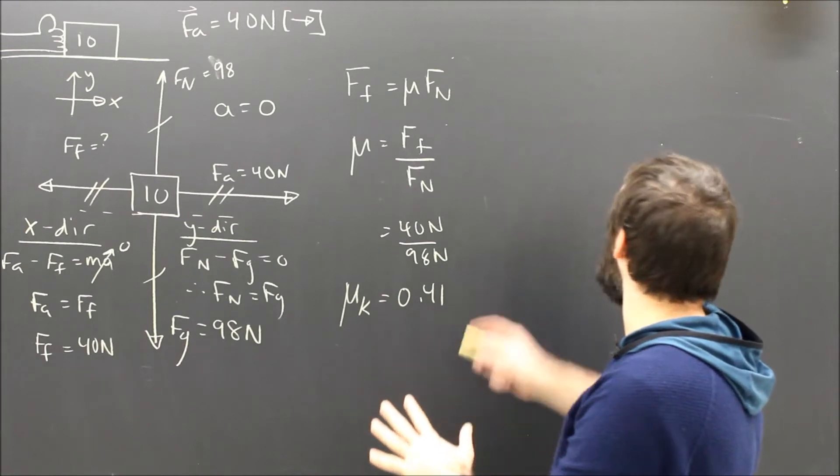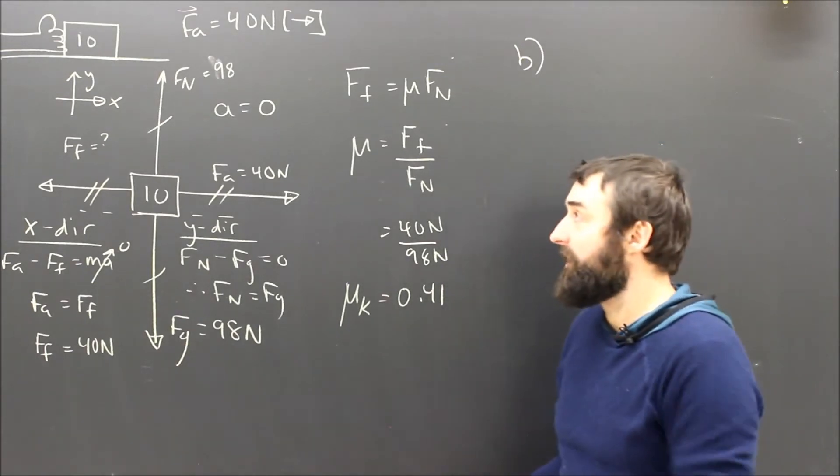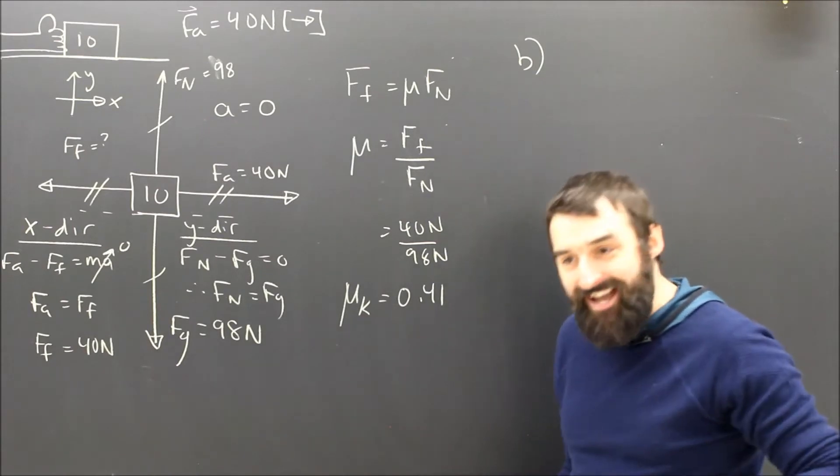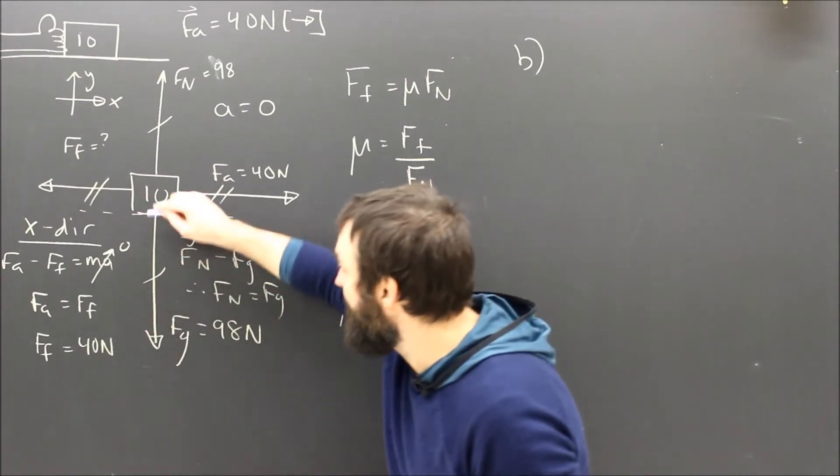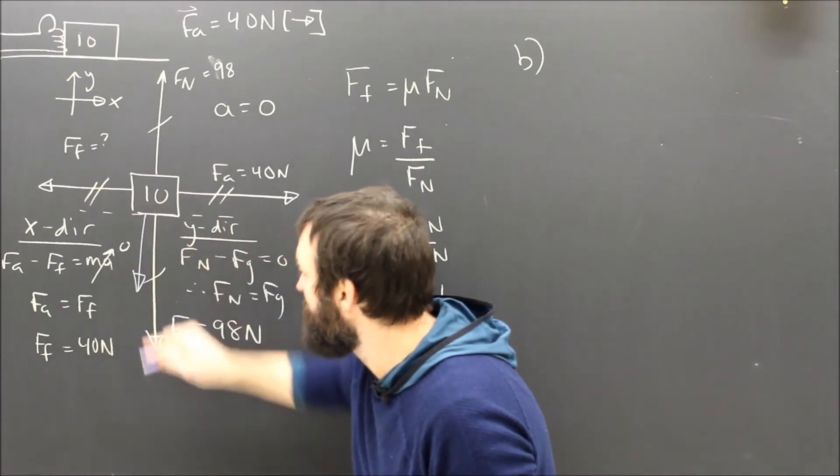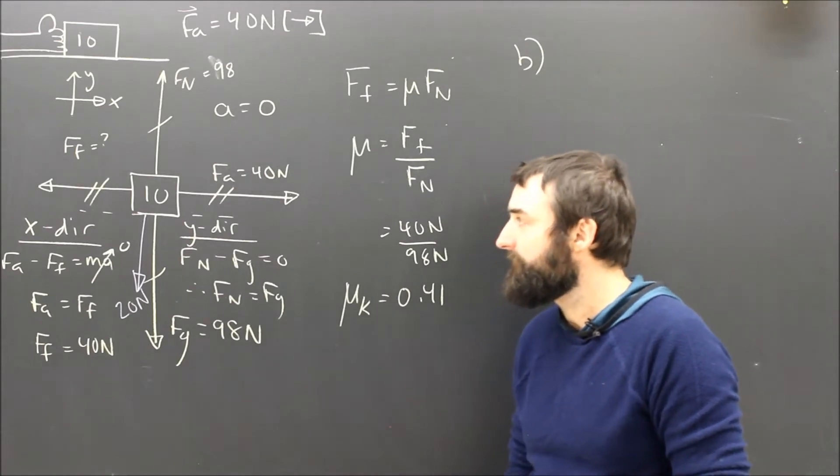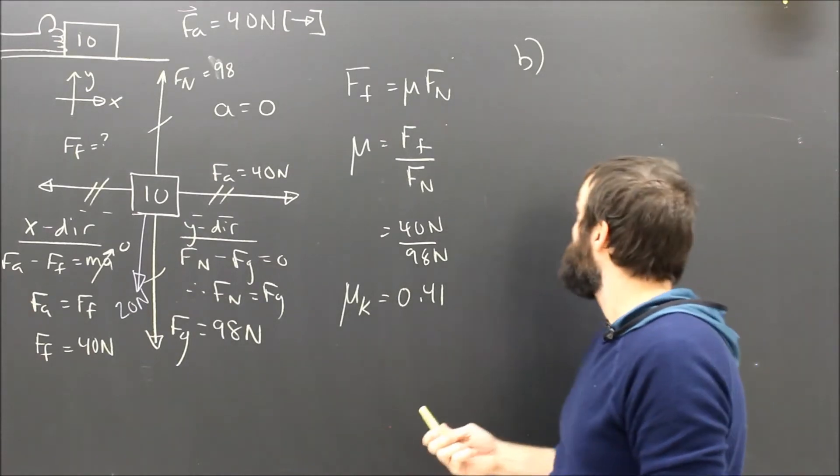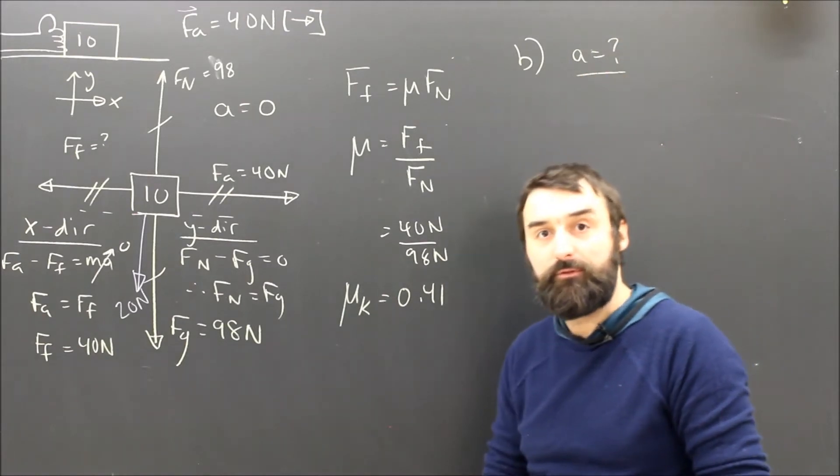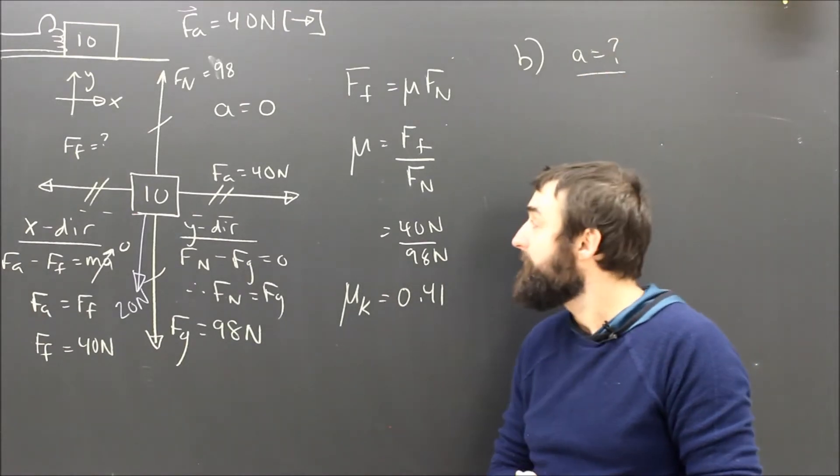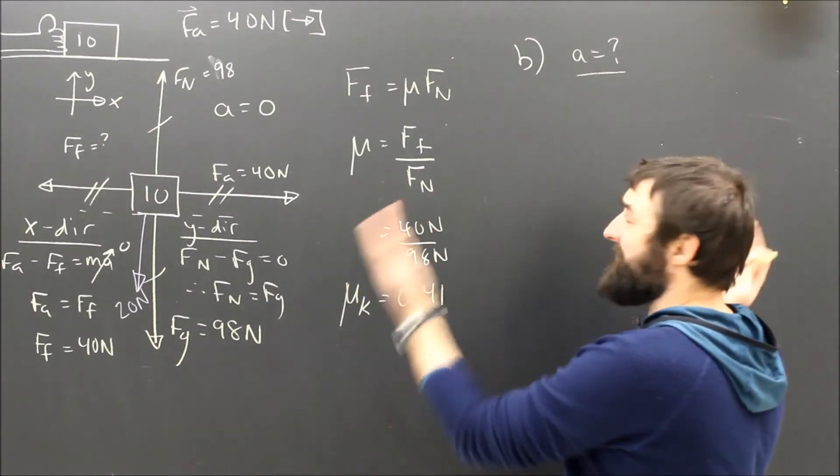Now that's all part A. In part B, somebody else comes along and pushes down on the box. As I'm pushing it, someone else comes along and they push down on the box with a force of I believe it's 20 newtons. And the question is, what's the acceleration of the box now?